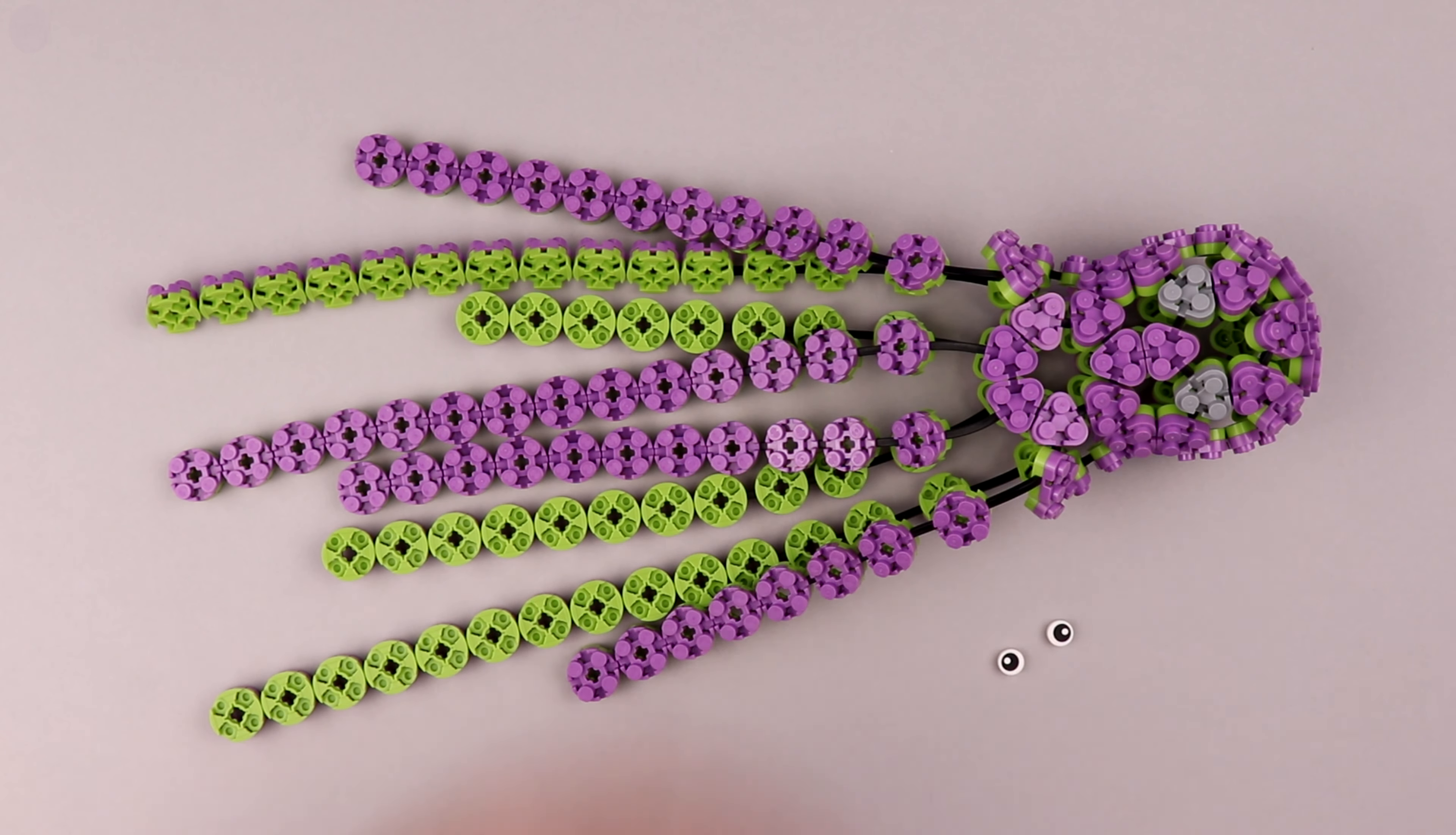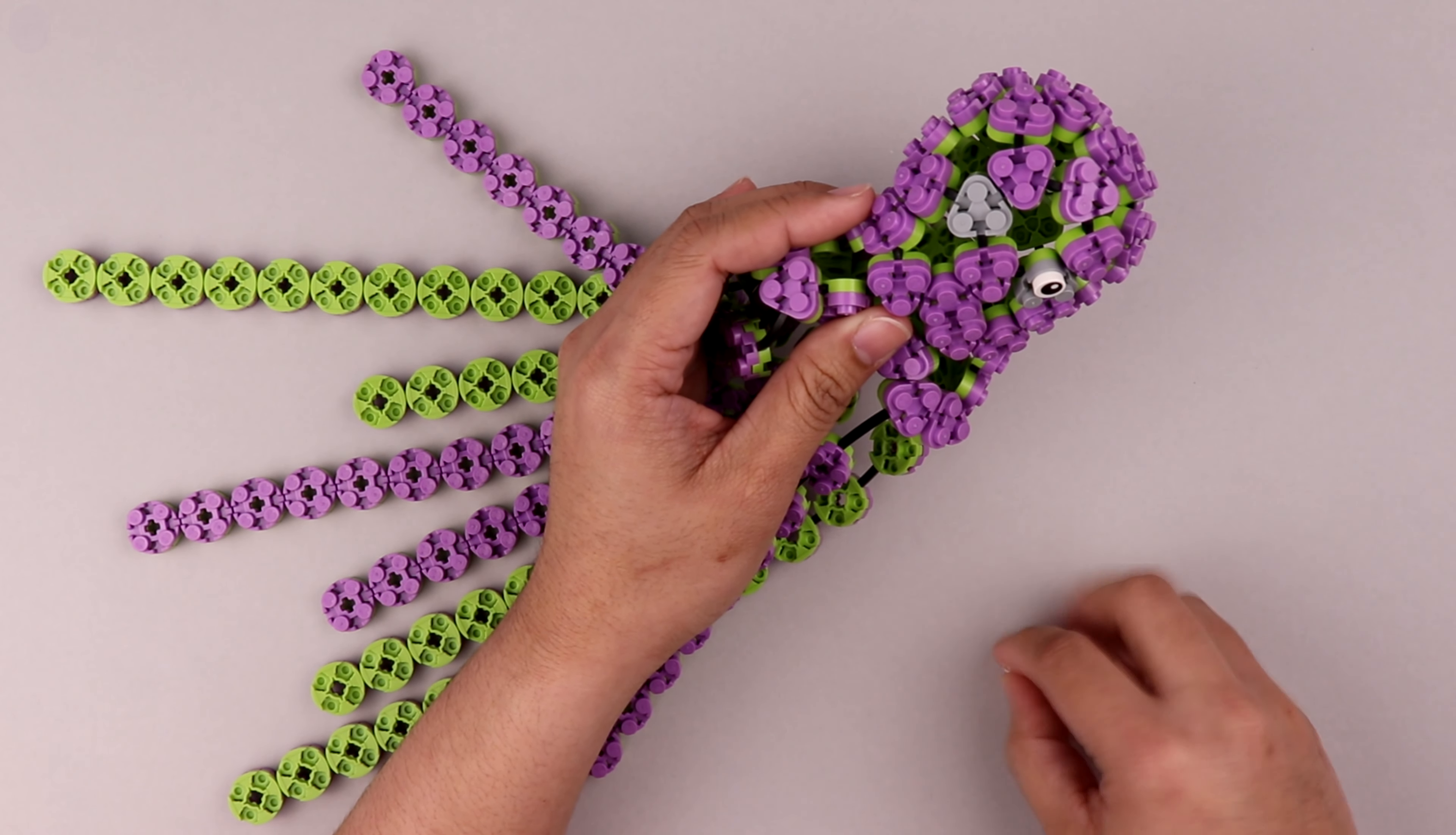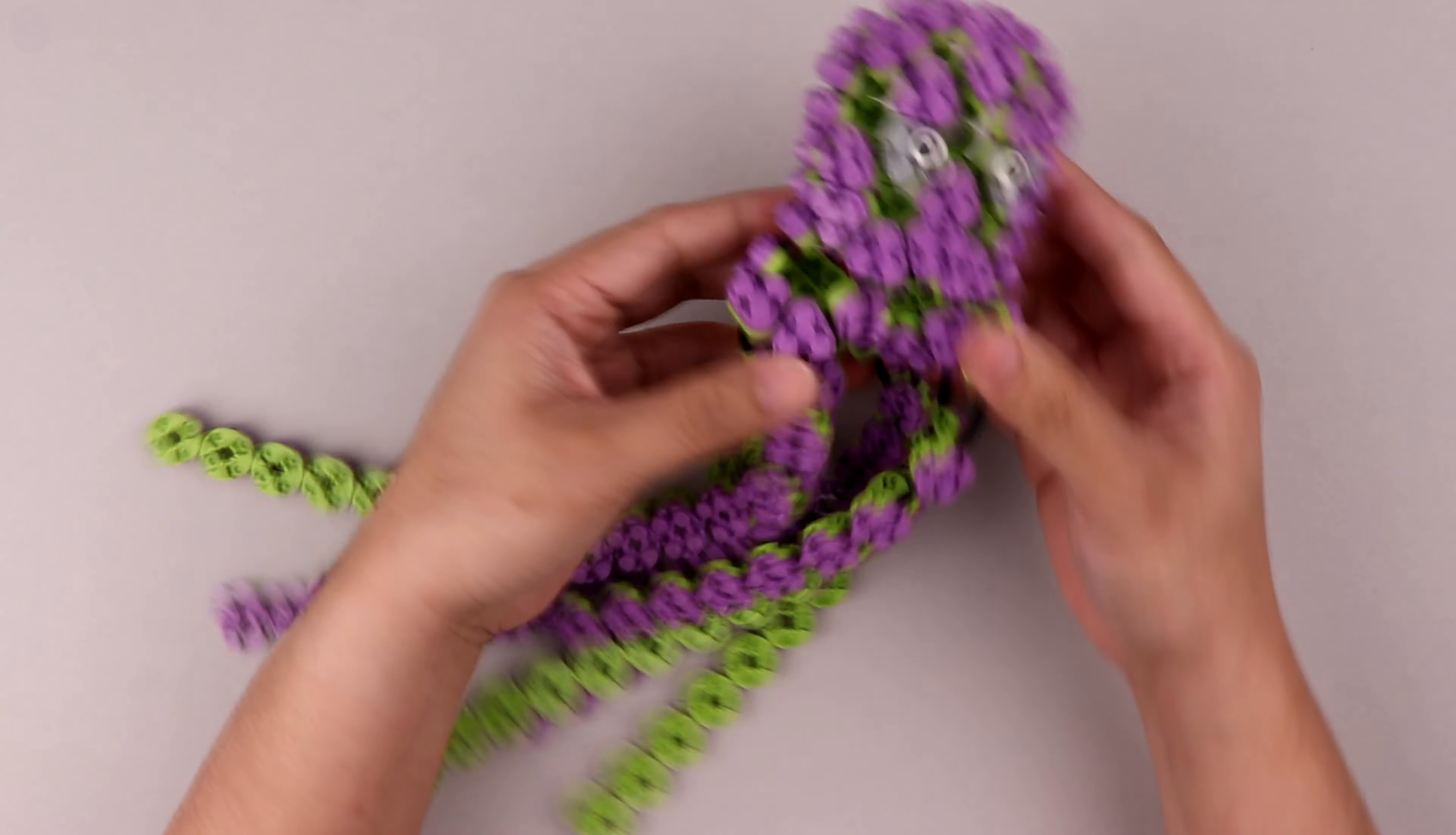So now all that remains is for us to give Octo the gift of sight by attaching a couple of eyes. And just like that, you've got your octopus ready to play and you can see how much fun it is.